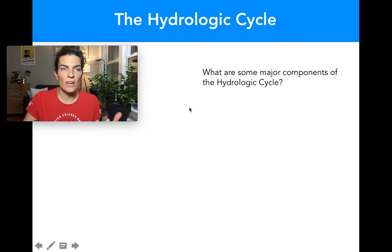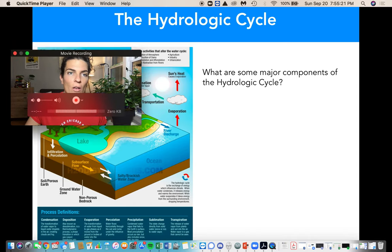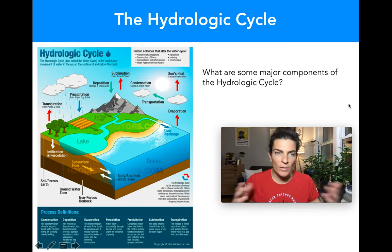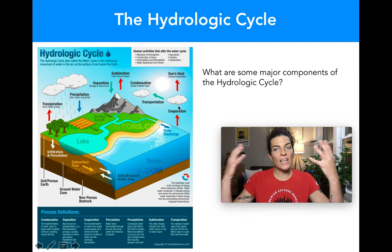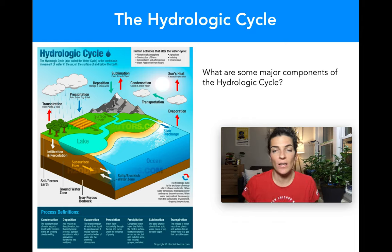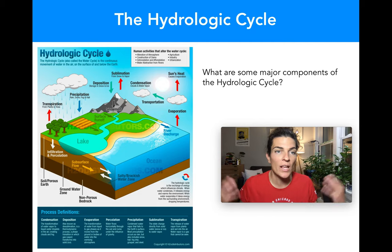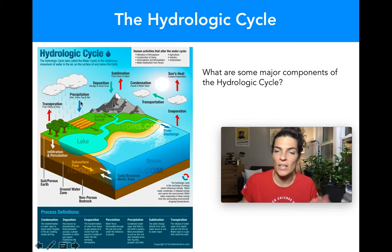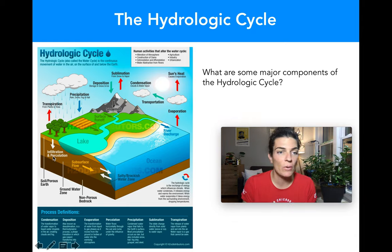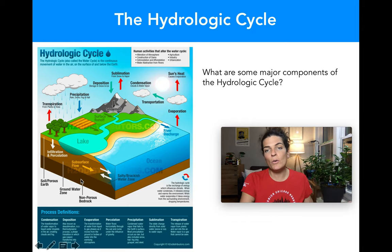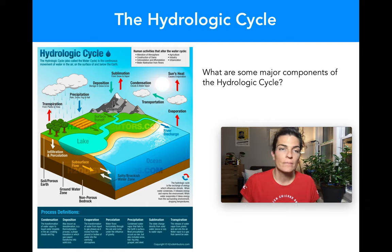The hydrologic cycle involves water evaporating off the ocean, rising into the atmosphere where it condenses into clouds, and being transported. Those clouds produce precipitation — snow, rain, fog, mist — which hits the ground and either infiltrates into groundwater or subsurface flow, moving underground into lakes, rivers, and back to the ocean, repeating the cycle.